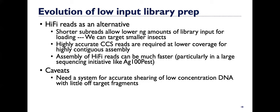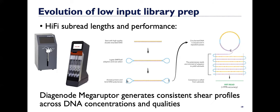There are some caveats though. In order to generate those hi-fi reads, we need a method or a system for accurate shearing of low concentration DNA with little off-target fragments. And there's typically not sufficient library to allow for sizing of this. Just like the CLR reads, if we create a shear of DNA that isn't tight around our target size, we're going to have a lot of off-target fragments that are not ideal for the library.